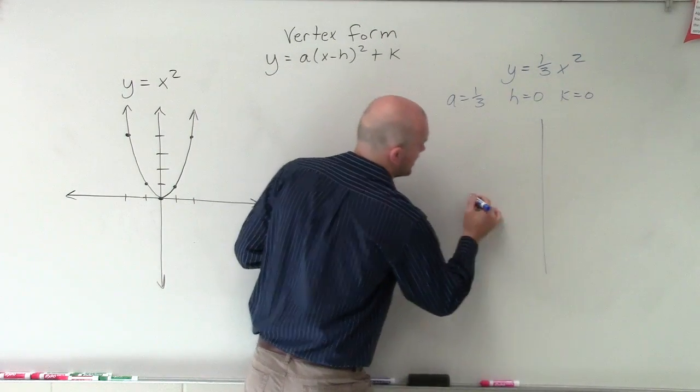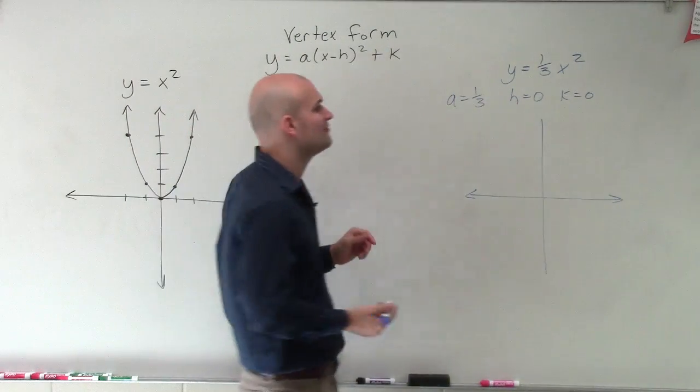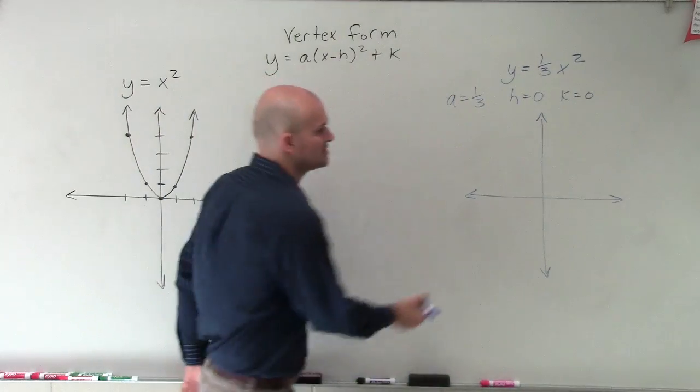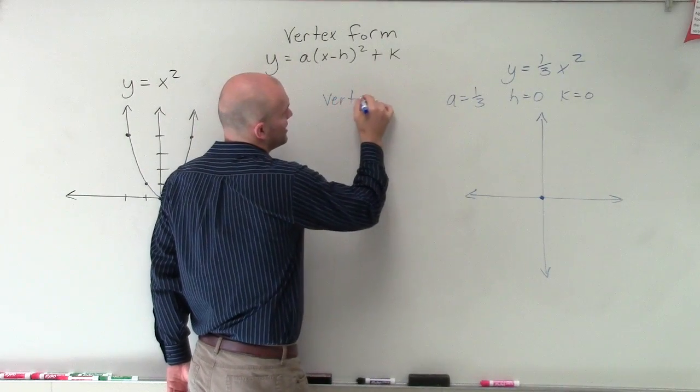And what we're going to have to do is go back to our table values to again see how our a is going to affect our graph. However, we know that the vertex is still going to be at (0, 0), and so forth is my axis of symmetry. So we can get that information out of the way.